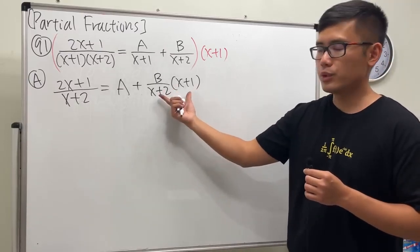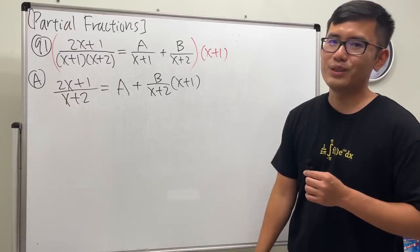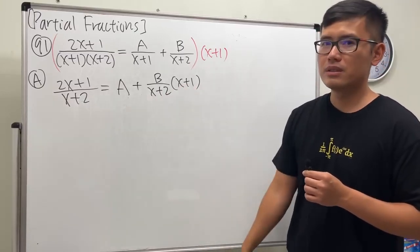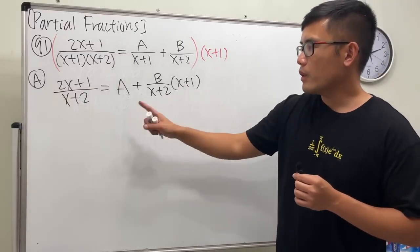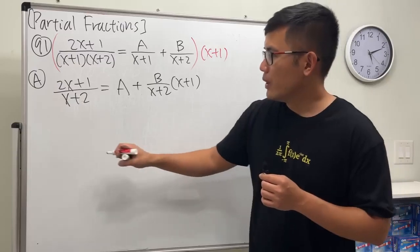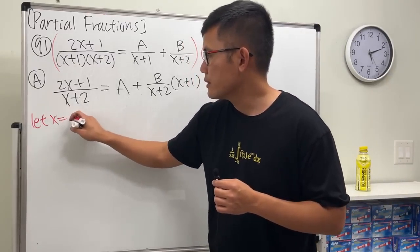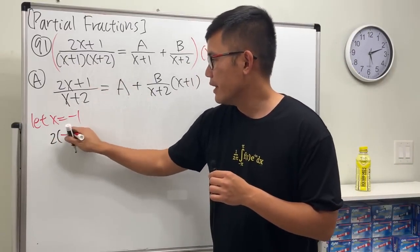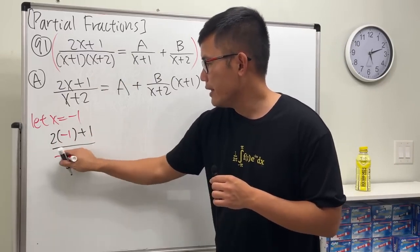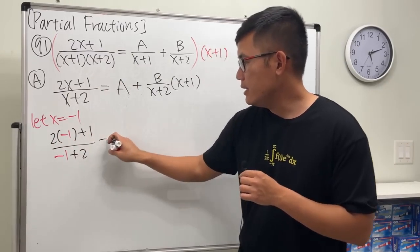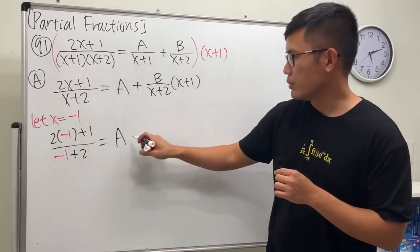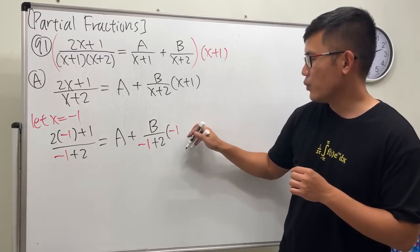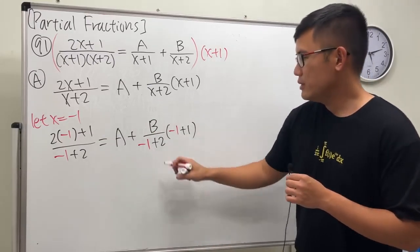How can we make this term equal to zero? x has to be negative 1 — if we put negative 1 here, this would be zero. So what we are going to do is let x equal negative 1 and plug into all the x's. We get 2 times negative 1 plus 1 over negative 1 plus 2, and this will give us the a value, plus b over negative 1 plus 2 times negative 1 plus 1 — this is just equal to zero.